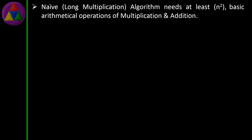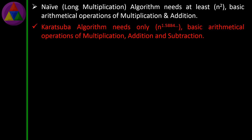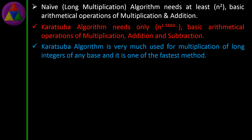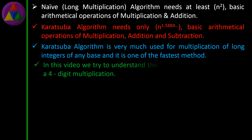The Naive long multiplication algorithm needs at least N² basic arithmetical operations of multiplication and addition. The Karatsuba algorithm needs only N^1.585 basic arithmetical operations of multiplication and subtraction. Karatsuba algorithm is very much used for multiplication of long integers of any base and it is one of the fastest methods. In this video we try to understand the Karatsuba algorithm through a four-digit multiplication.